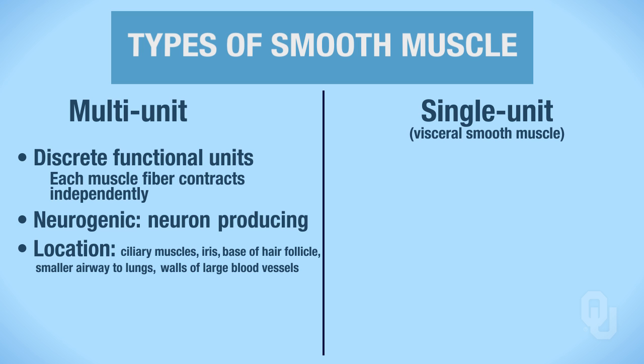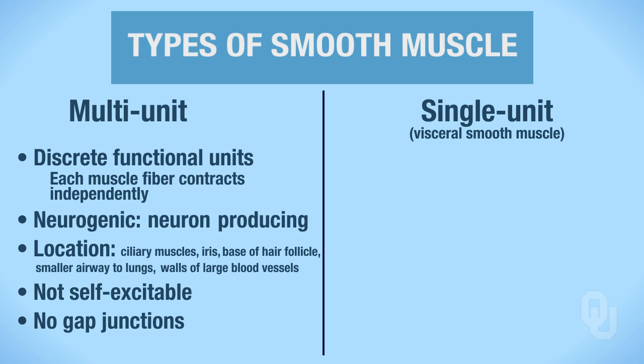The next characteristic of multi-unit smooth muscle is that these smooth muscle cells are not self-excitable. This makes sense because they are neurogenic — they rely on a neuron to tell them to contract. And since these cells are not self-excitable, they have no gap junctions. This is the last characteristic for multi-unit smooth muscle.